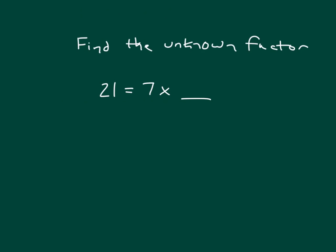Find the unknown factor. 21 = 7 × 3. How did you figure it out? Did you know your threes facts? Did you know your sevens facts?